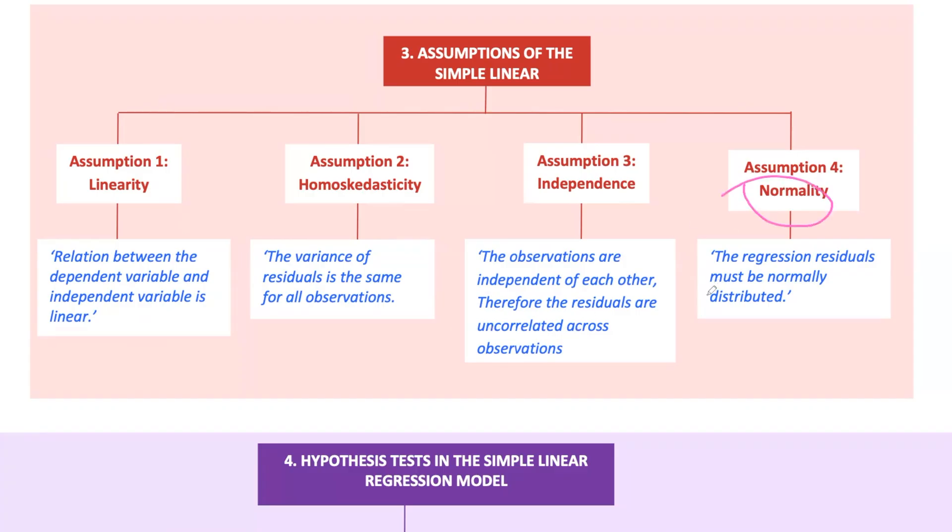Fourth is normality. The error terms are normally distributed. This assumption is important for hypothesis testing and constructing confidence intervals. In large samples, the normality assumption is less critical, but it's still good to check. If these assumptions hold, our model is likely to give reliable results. If not, we might need to transform our data or use a different model.